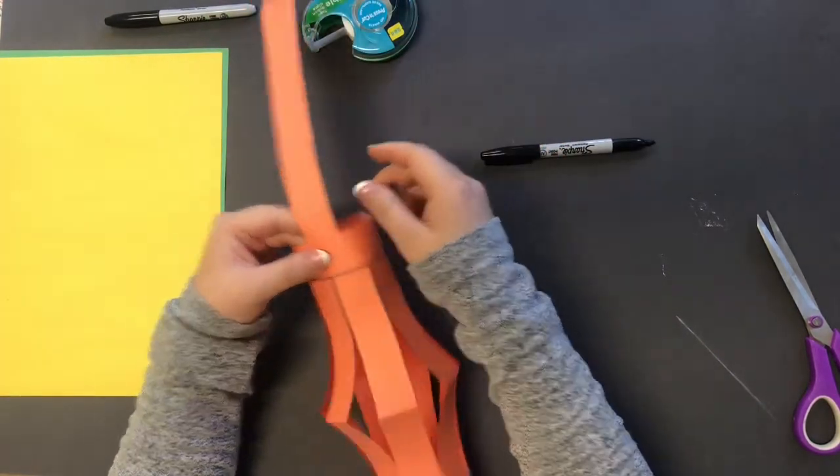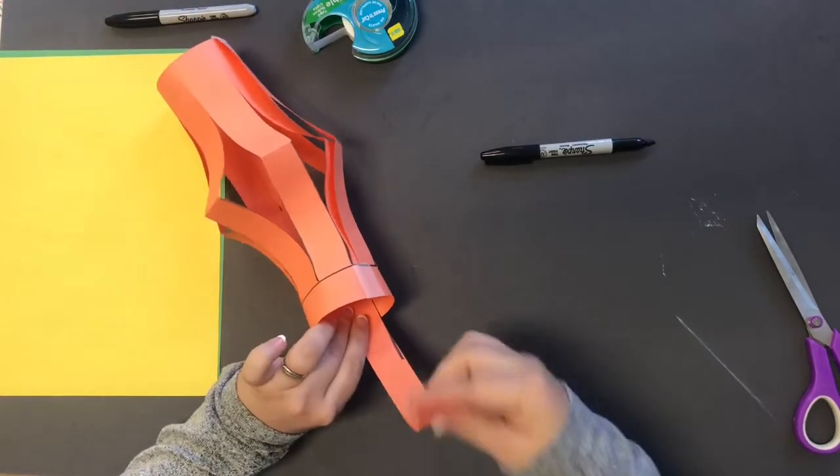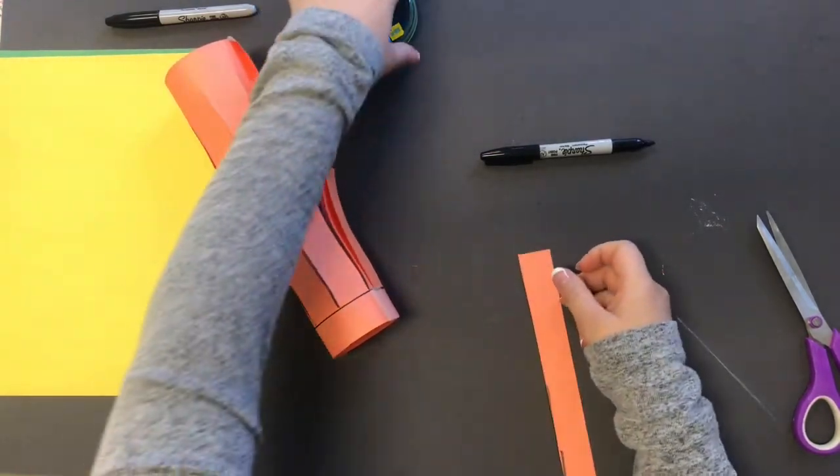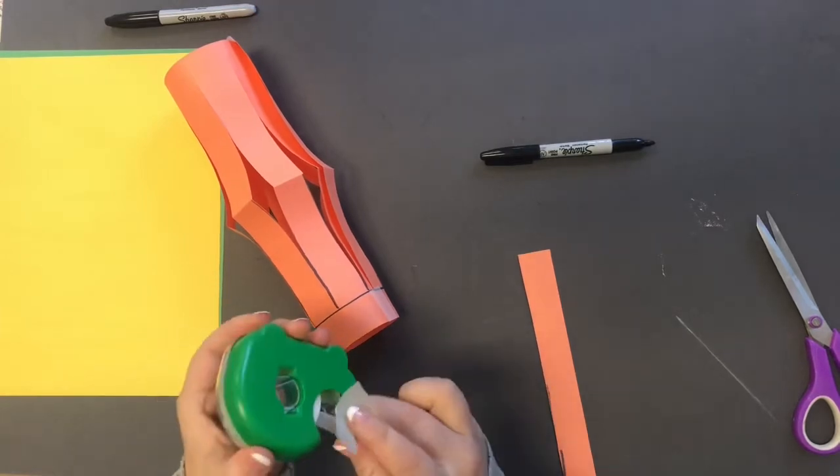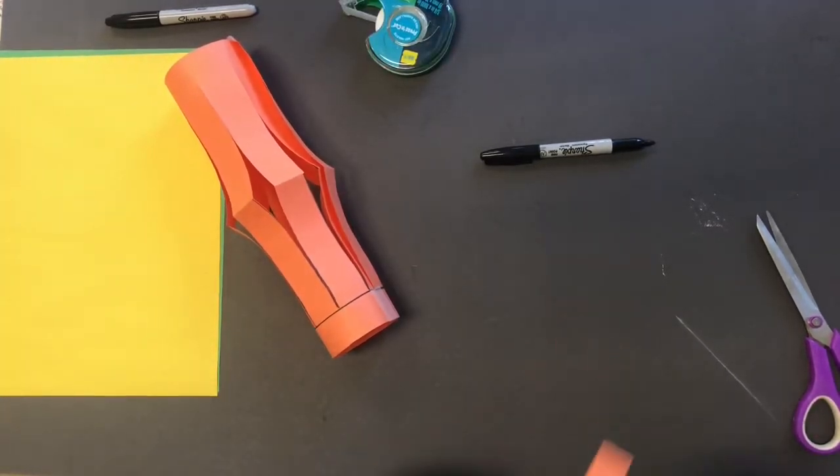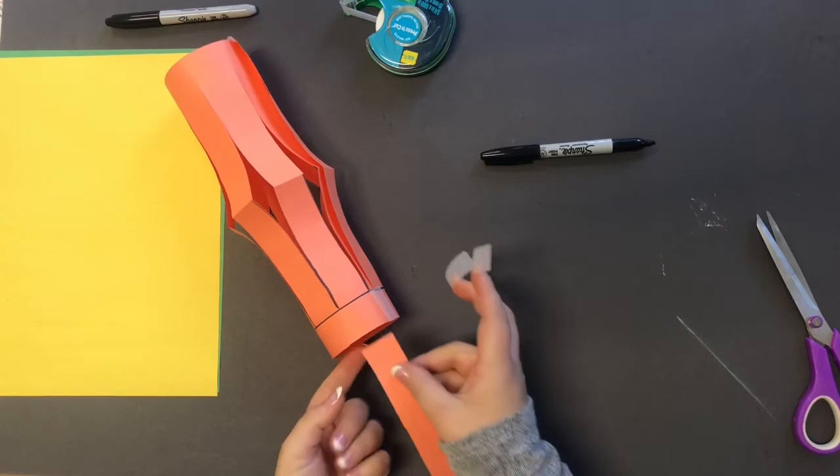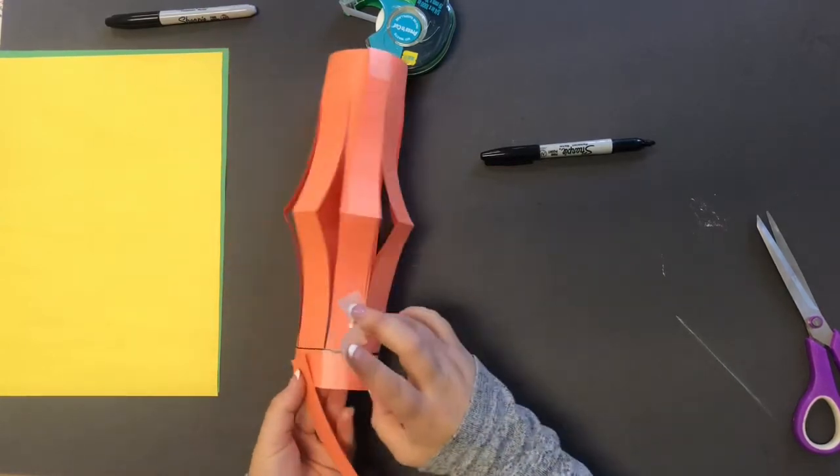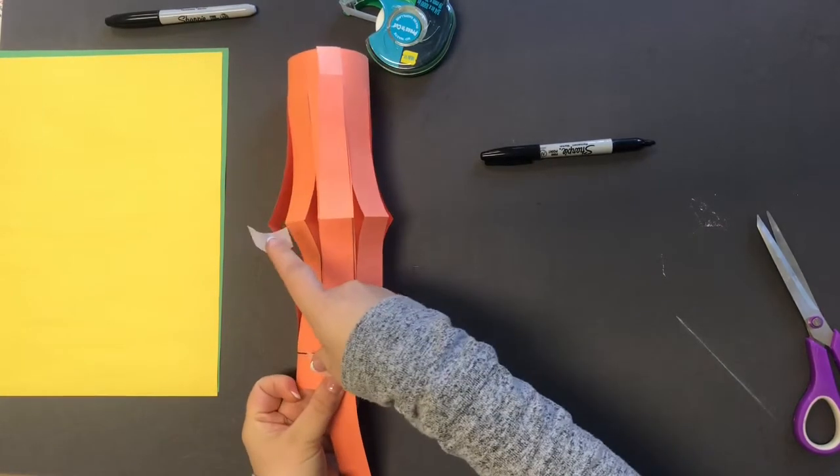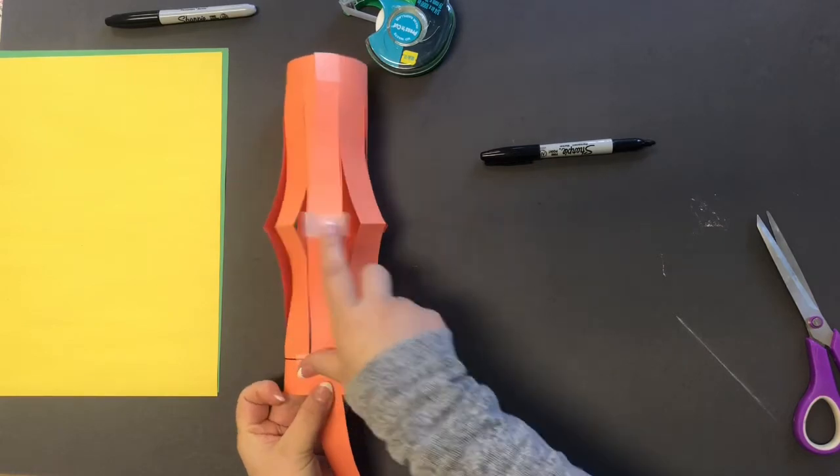Now that strip that we initially cut out is going to serve as the handle. Again, get you a piece of tape or stapler. And I put mine kind of over that tape so that I just kind of hide that a little bit.